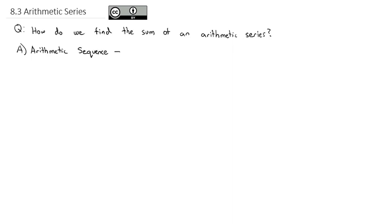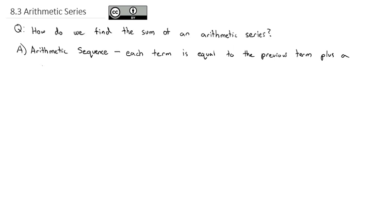If you recall, a sequence is a list of numbers — an ordered list of numbers — and a series is the sum of the sequence. Right now we're just looking at the ordered list. In an arithmetic sequence, each term is equal to the previous term plus a common difference.